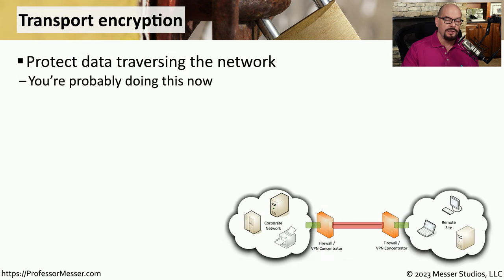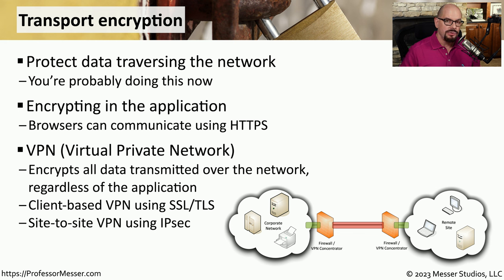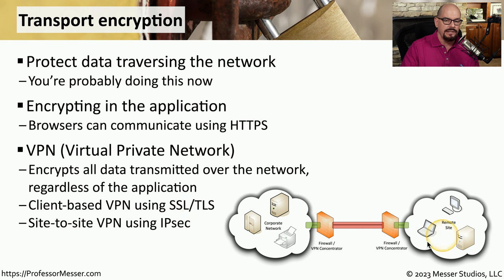Another common place to perform encryption is when we're sending data across the network. We want to be sure that everything we're sending between two devices is protected, and if someone taps into this connection and views that data, they wouldn't be able to make sense of any of those details. For example, you're probably using a browser right now, and all of the communication is most likely using HTTPS, which means everything traversing the network is encrypted. If you need to connect different sites or individuals for remote access, we commonly use a VPN — Virtual Private Network — which creates an encrypted tunnel. This is commonly used with client-based VPNs using SSL or TLS, and if you're connecting two sites together, we commonly use IPsec to provide that VPN connectivity.